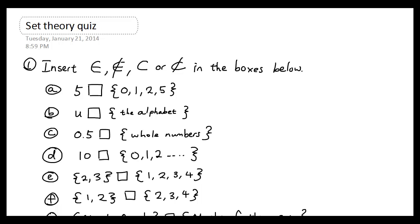Question one: insert either four of these symbols in each of the boxes below. So what you can see in question 1a is that 5 is an element of this set because 5 exists within the set here. Therefore, I'm going to use the first symbol, which is 'is an element of.'